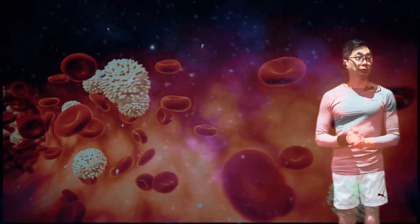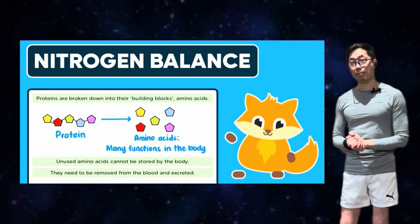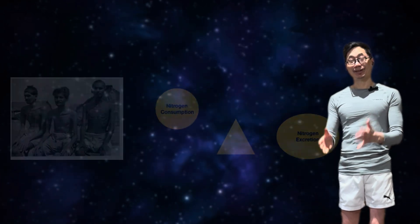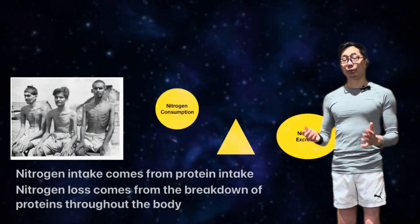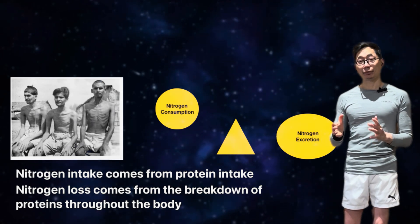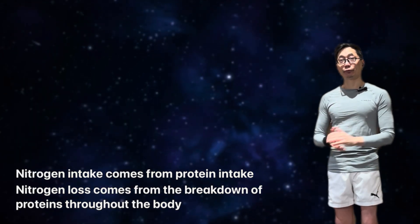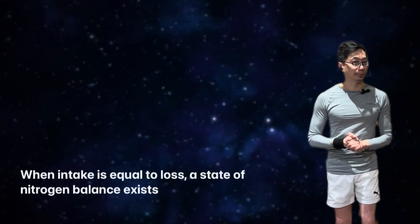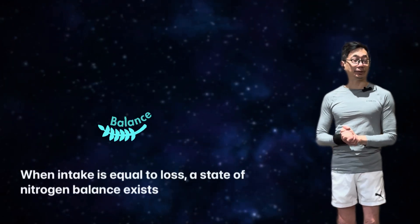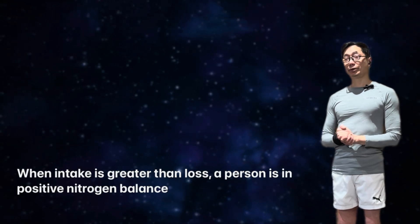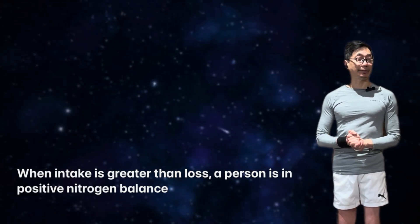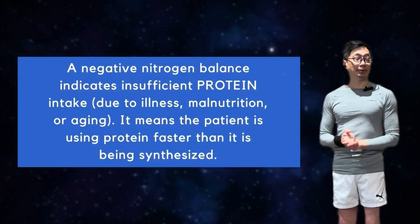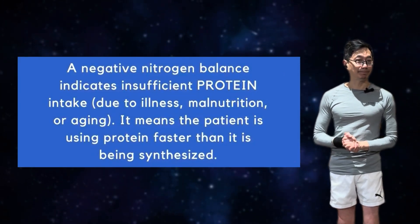And this is where you can get into something that is known as nitrogen balance. This is the difference between total nitrogen intake and total nitrogen loss. And nitrogen intake comes from protein intake, and nitrogen loss comes from the breakdown of proteins throughout the body. So when the intake is equal to loss, a state of nitrogen balance exists. When intake is greater than loss, a person is in positive nitrogen balance. But when loss is greater than intake, this would result in a negative nitrogen balance.